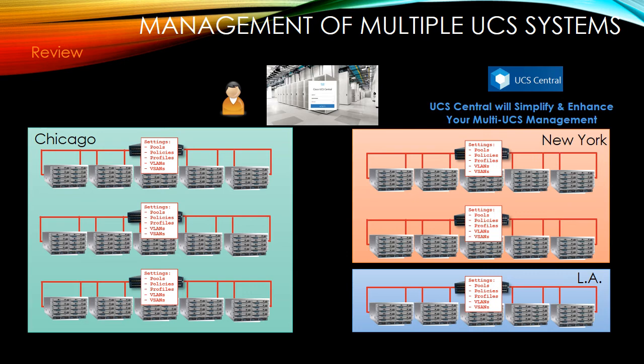UCS Central enables global management of multiple UCS domains, both local and remote, making us more efficient and more effective. Cisco UCS administrators can manage and gain a high-level view of all UCS domains. The goal is centralized management where we can KVM to any machine, set policies, firmware policies, hardware compatibility reports, and have global pooling for MAC addresses or worldwide port names — these are some of the things UCS Central gives us in this multi-domain environment.